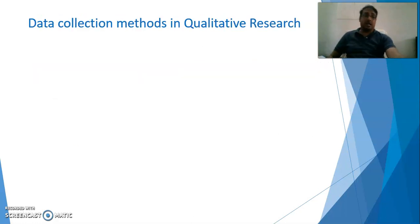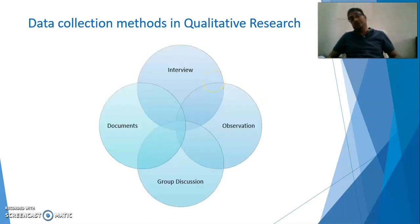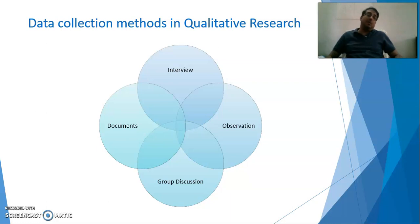For data collection methods in qualitative research, there are basically four methods: number one is interview, then observation, group discussion, and document analysis.